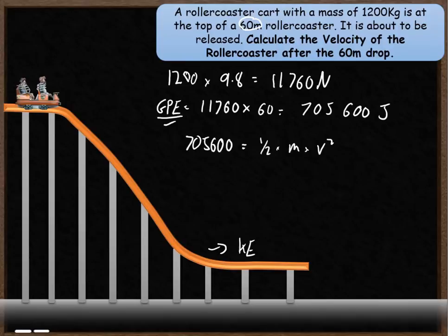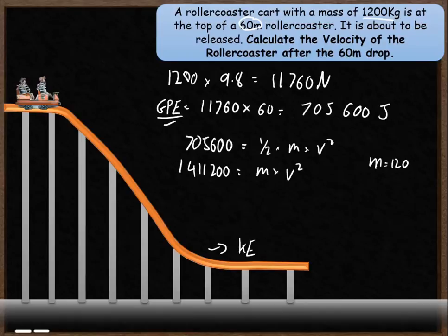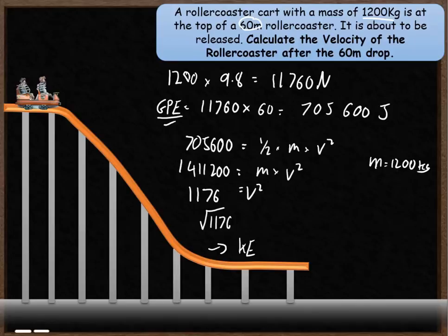I'm going to get rid of the half first by multiplying everything by 2, giving 1,411,200 equals mass times velocity squared. The mass equals 1,200 kilograms, so to get rid of the mass I divide by 1,200 on both sides — v squared then equals 1,176. Because it's v squared I need to square root, and that gives me 34.3 meters per second, which is the velocity.